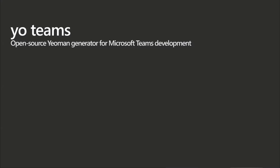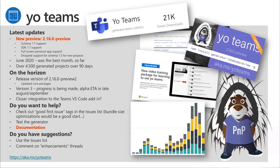A quick recap on Yo Teams, also an open source project under the PMP umbrella. Victor is not on the call. There's a new preview version available — 2.16 preview — which will have support for schema 1.7 and SDK 1.7. SDK 1.7 came in mid-July, but Victor was on summer vacation. June 2020 was the best month so far — over 4,500 generated projects within the past 90 days. People are using more and more Yo Teams as one of the generator options when targeting Microsoft Teams.